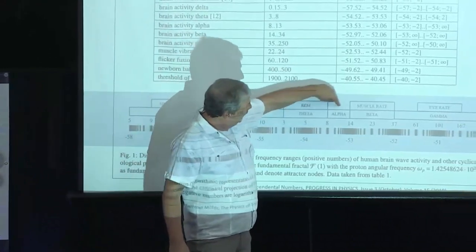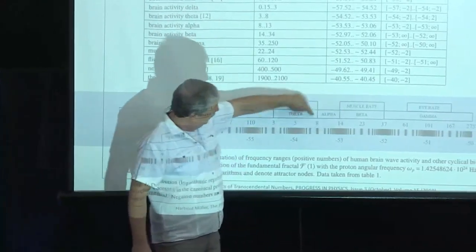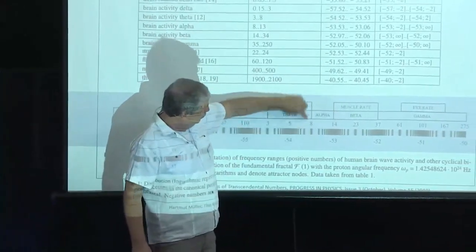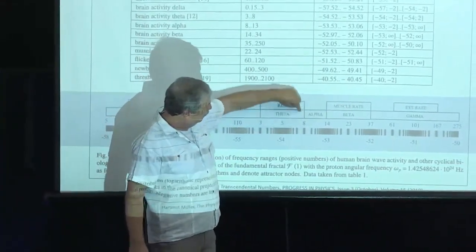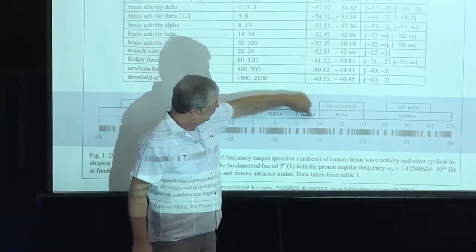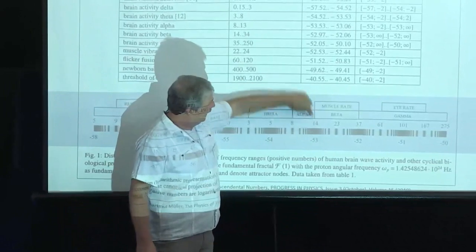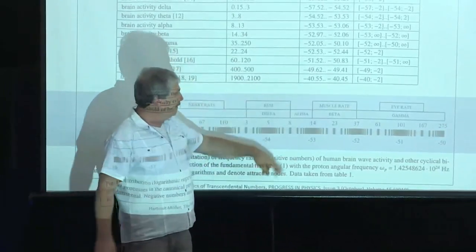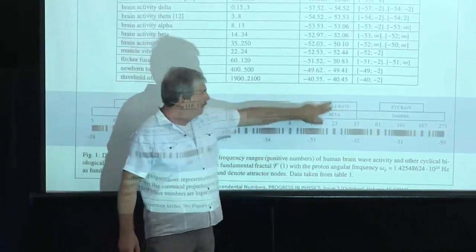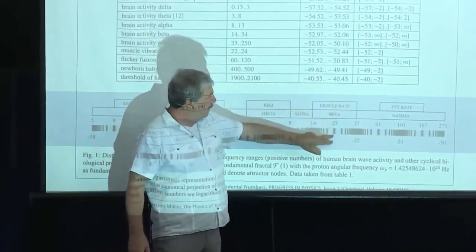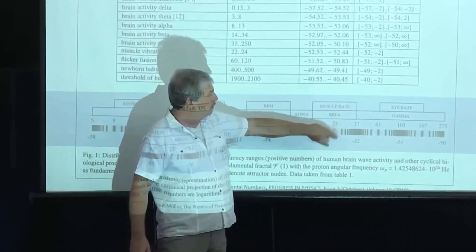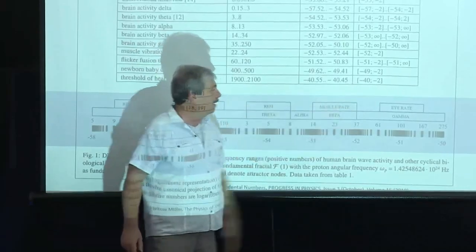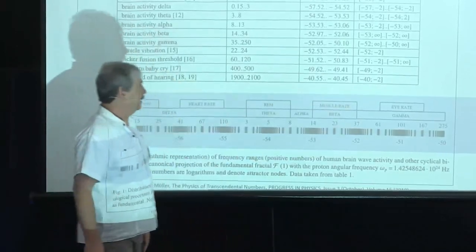In the EEG analysis, we find the theta range with 5 Hertz, which we find in the REM phase of sleep where we process many things emotionally in dreams. The alpha rate is also here, between important boundaries of 8 and 40 Hertz. And then we see the muscle rate, which is at 23 Hertz, and the eye rate.